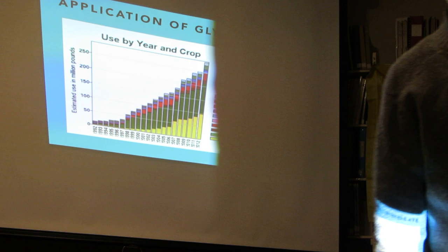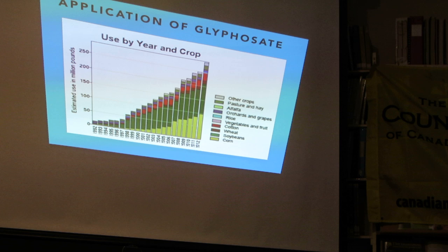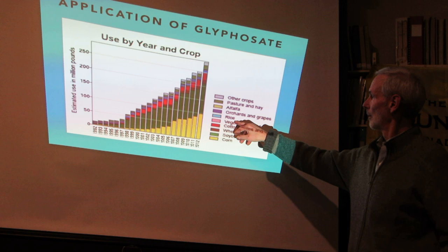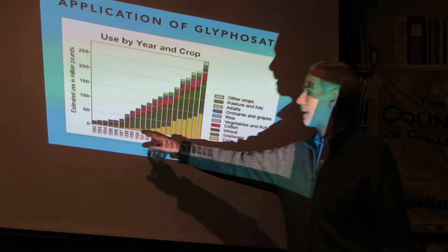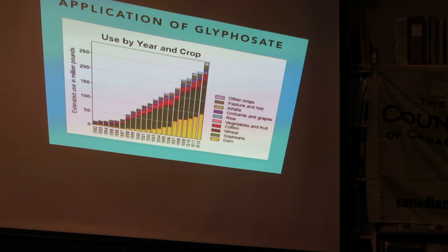Glyphosate is now the most frequently used, highest volume pesticide and herbicide in the world. The plants made resistant to glyphosate include corn, soybeans, wheat, cotton, vegetables and fruit, rice, orchards and grapes, alfalfa, pasture and hay, and other crops. Soybeans were first, and now corn use is going crazy — 90% of the corn planted in the U.S. is glyphosate resistant, Roundup Ready. That's a pretty amazing number.